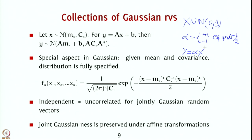What does y do? y is essentially a coin flip multiplied by a Gaussian. Since x is Normal(0,1), if alpha is +1, y is the same as x — Gaussian. If alpha is −1, y is −x, which is also Normal(0,1). So in both cases, y is Gaussian with mean 0 and variance 1. But this is a classic example where x and y are both individually Gaussian but not jointly Gaussian.